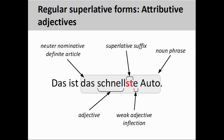Superlatives can also function as an attributive adjective in a noun phrase. The sentence 'das ist das schnellste Auto' contains one noun phrase, 'das schnellste Auto,' highlighted by the grey rounded box on screen. This noun phrase consists of one neuter definite article in the nominative case, 'das,' a superlative adjective with added inflection, 'schnellste,' and the noun itself, 'Auto.' The superlative is formed by adding the suffix '-st' to the positive form of the adjective. However, since it is used here as an attributive adjective, we also need to add the appropriate adjective ending. Since we have a definite article, 'das,' we only need to add the correct weak adjective inflection, '-e,' to the superlative.